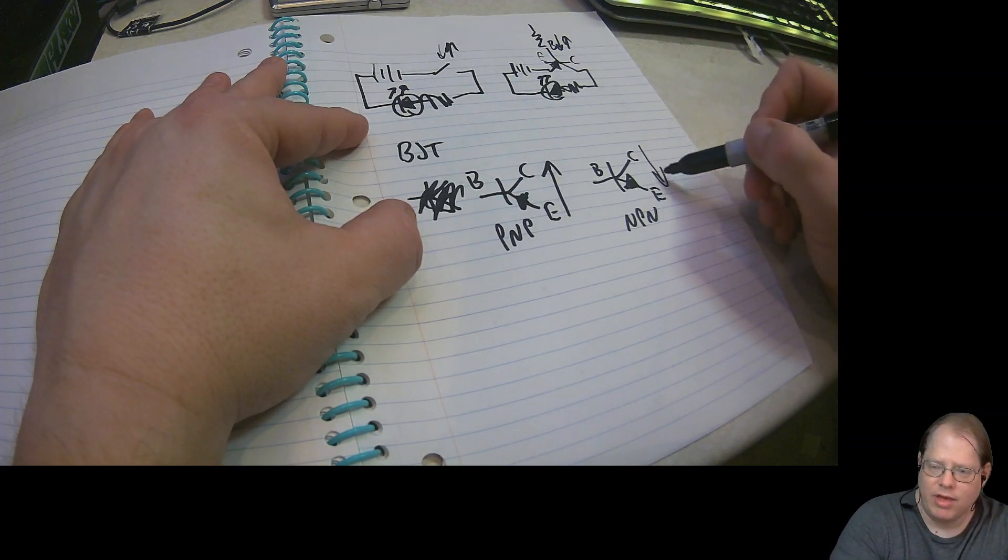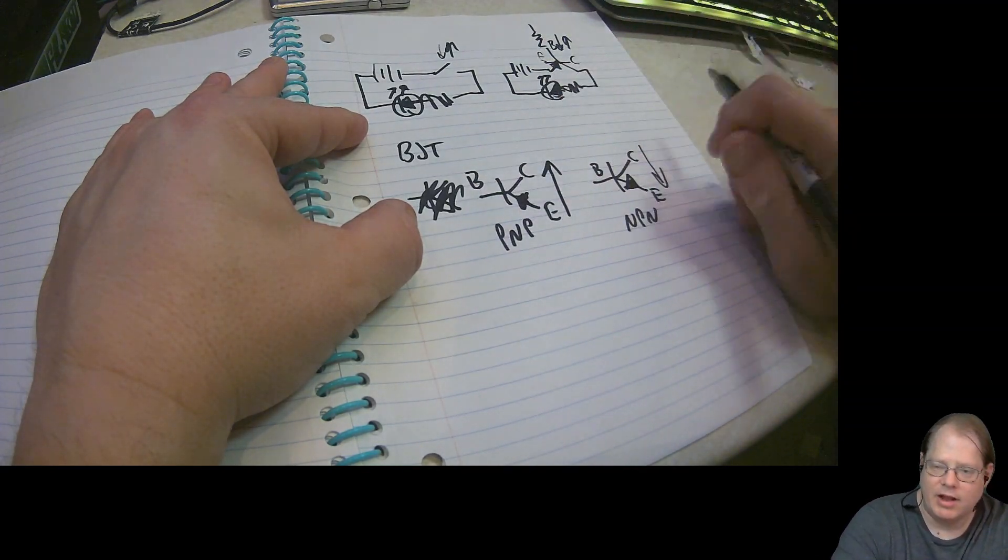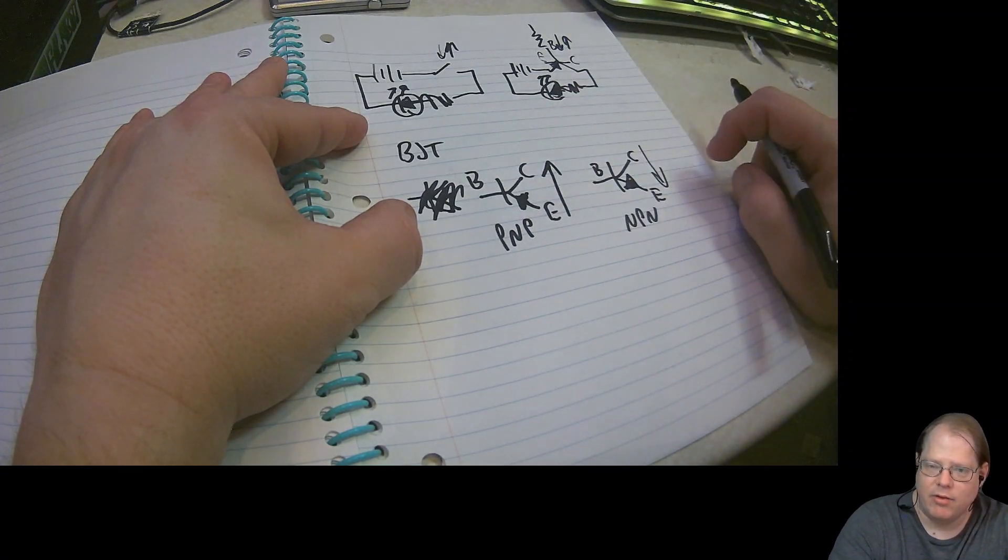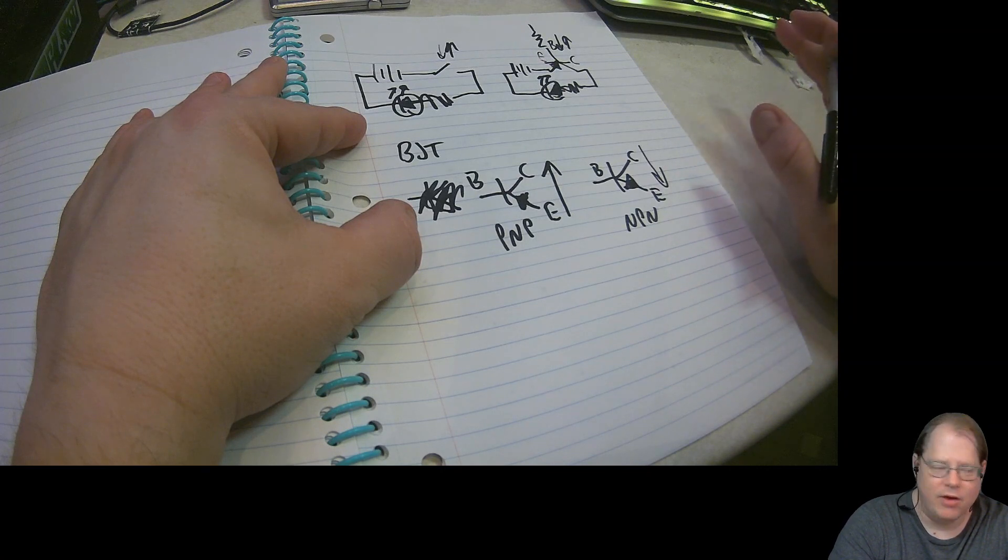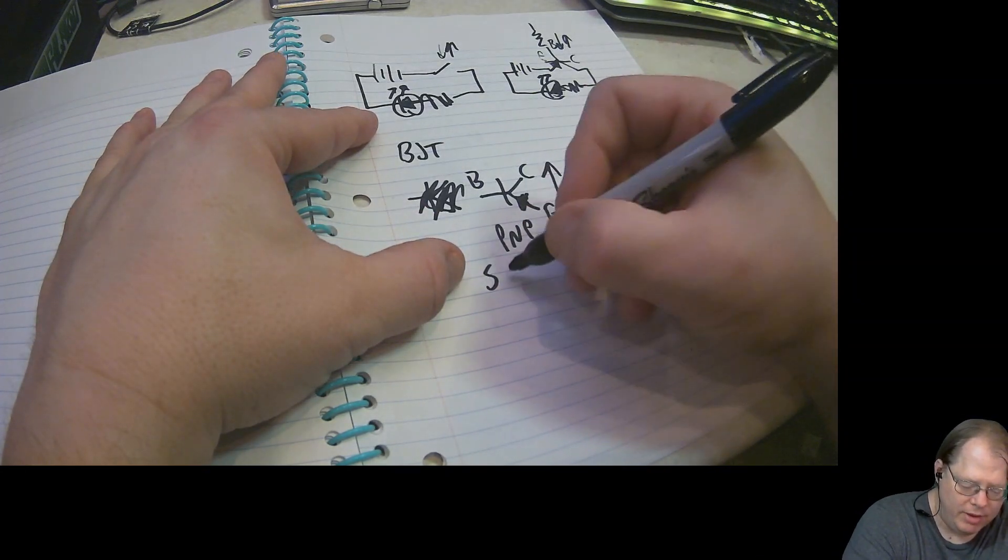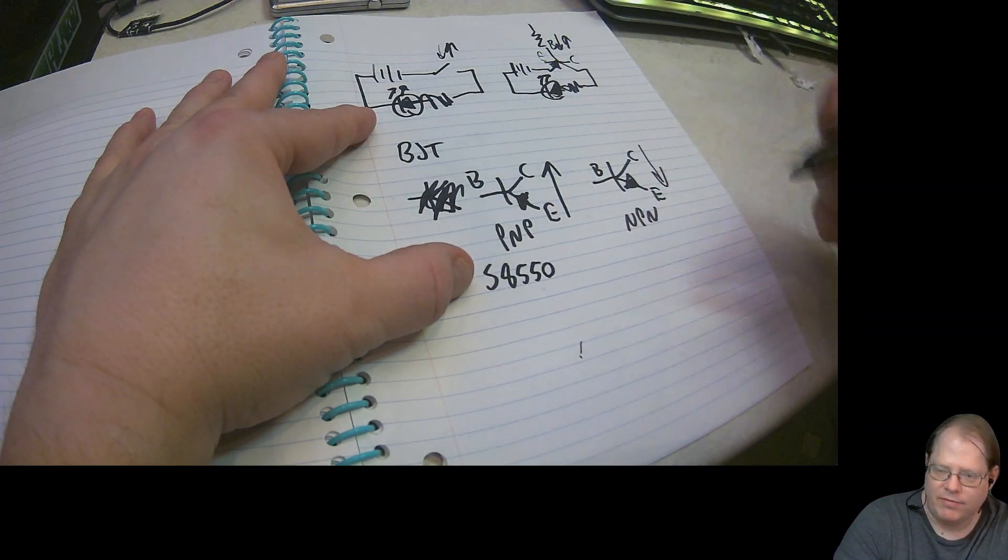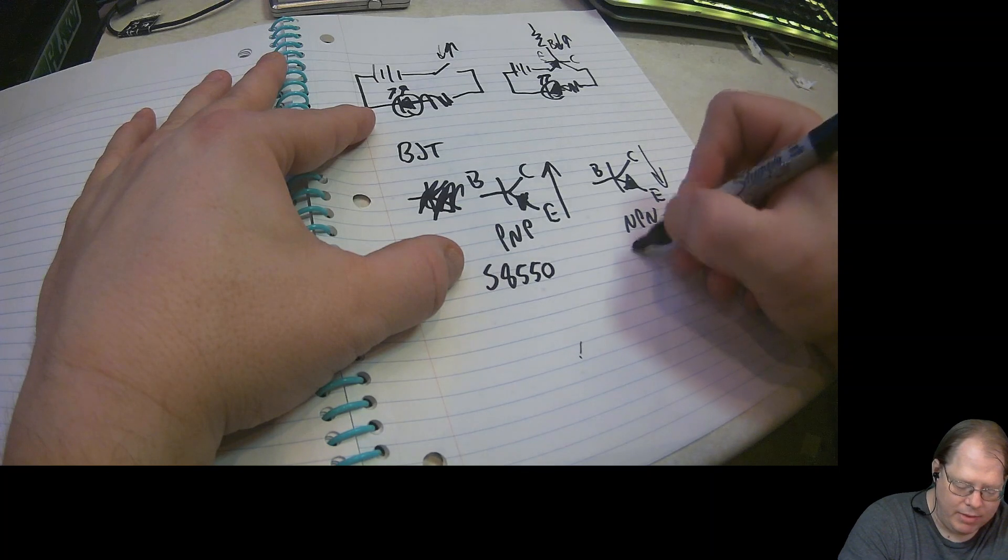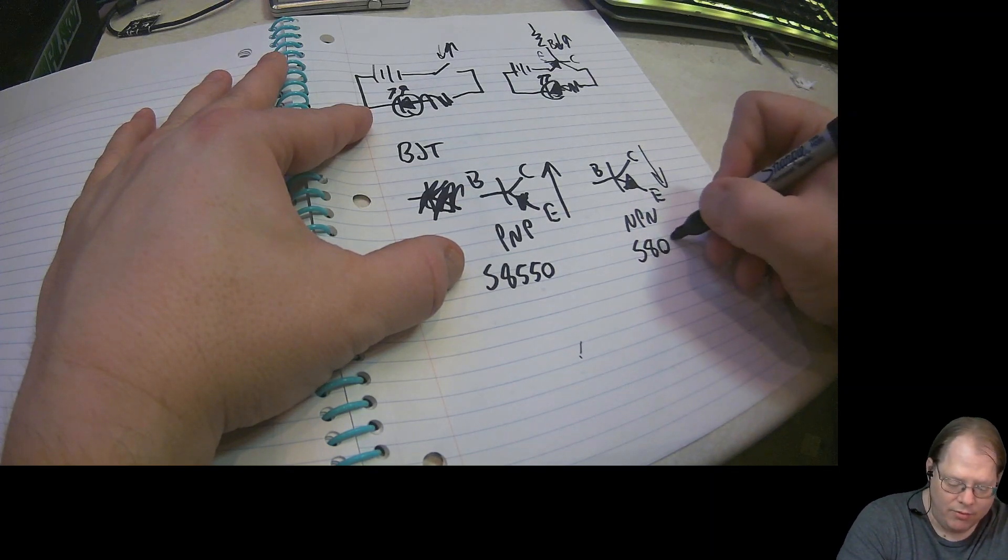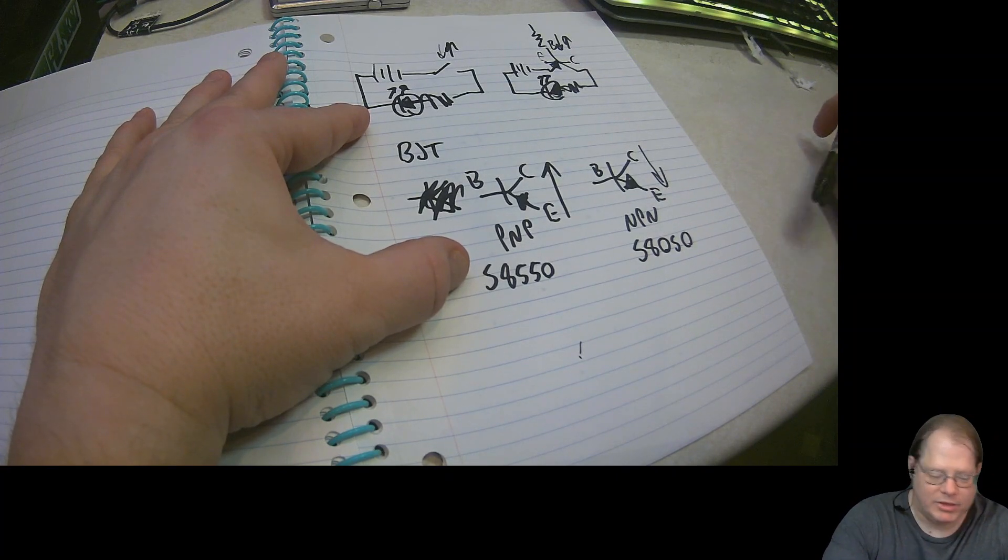And the way we control that flow of current is by adjusting the voltage in and out of the base, which is where we're going to connect our microcontroller GPIO pin. Now, if you get nothing else from this video, this is the part you've really got to pay attention to. In the kit, the model number for the PNP transistor is S8550, and the NPN is S8050. Very similar part numbers, but very different functionality.